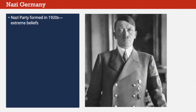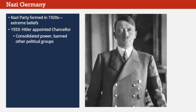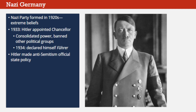When Adolf Hitler's Nazi Party first formed in the 1920s, its beliefs were so extreme that many people viewed the Nazis as a joke—a bad joke. But by the 1930s, no one was laughing at the Nazis, in Germany or elsewhere. Hitler's official rise to power began in 1933, when he was appointed German Chancellor. He quickly consolidated power over all aspects of Germans' lives, suspended civil liberties, and eventually banned all political groups except the Nazis. In 1934, Hitler declared himself the Fuhrer, the ultimate leader, of Germany. Going forward, he would make anti-Semitism the official policy of the Nazi state.